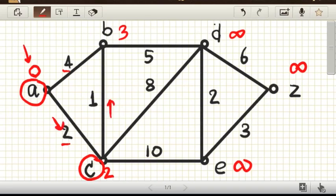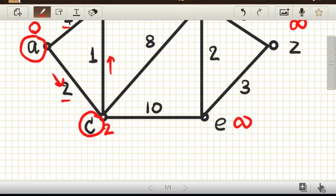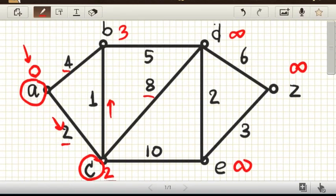The next one, D, we have two plus eight equals ten. So the cost of D, ten, is less than infinity, the current cost. So the cost of D here will be updated to ten. And the last one, E, the cost of E will be updated to two plus ten equals twelve.